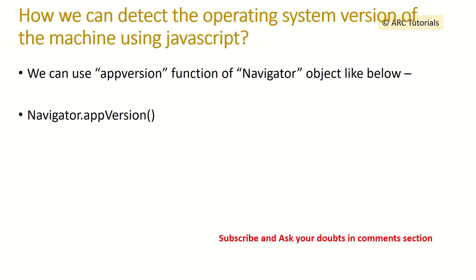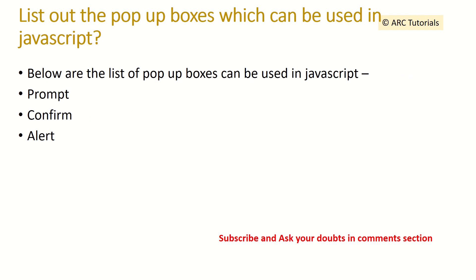How can we detect the operating system version of the machine using JavaScript? The interviewer is asking about your experience using system details. There is an object called navigator which contains all the information about the system you are using — for example, you can check appVersion and appName for browser and machine details. In this case we will use navigator.appVersion.